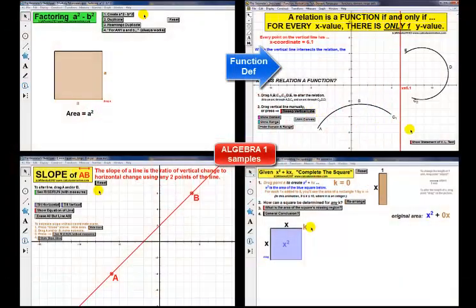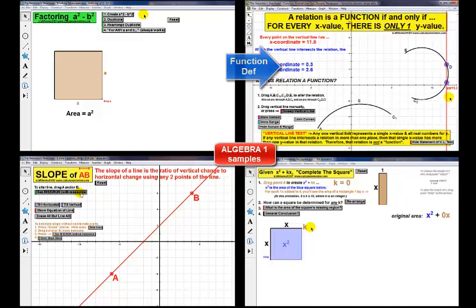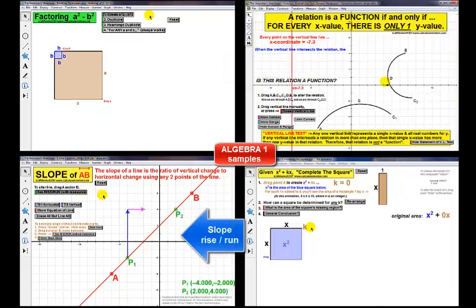The vertical line test comes alive to define what is and what is not a function. We see the rise over run slope ratio.